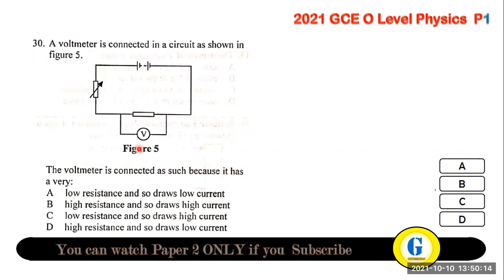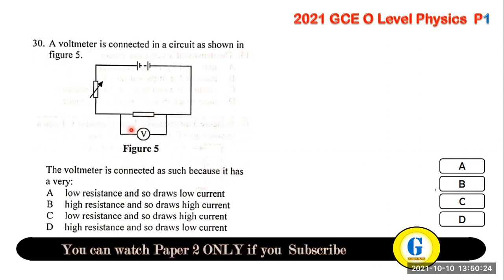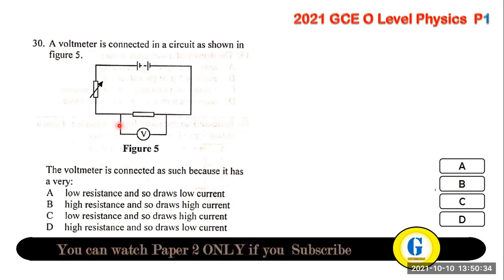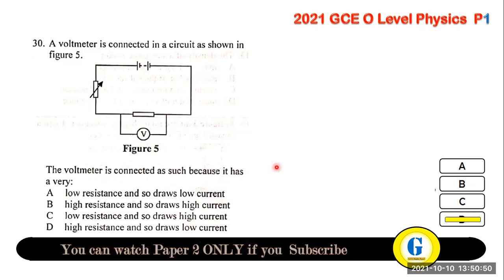Question 30: a voltmeter is connected in parallel in a circuit because it has a very high resistance — sometimes infinitely high. This means only negligible (very small) currents flow through it. An ammeter, by contrast, is connected in series and has very low resistance to measure all the current.